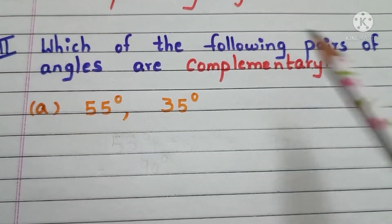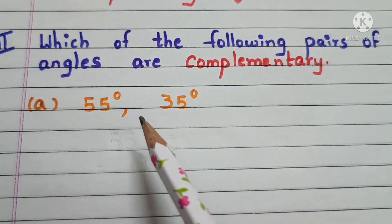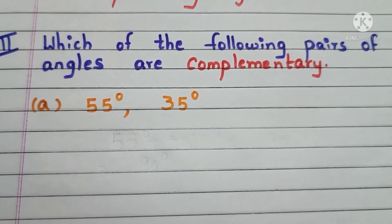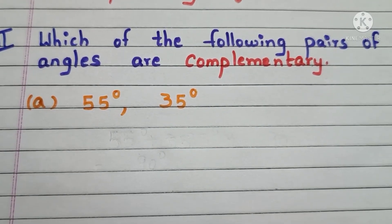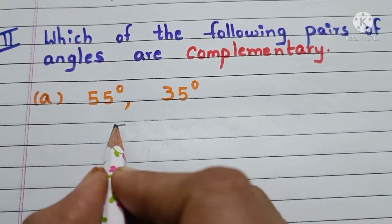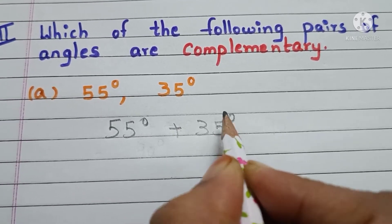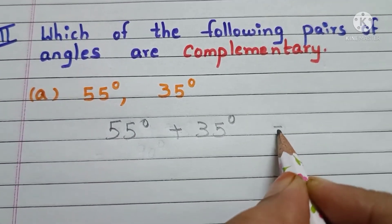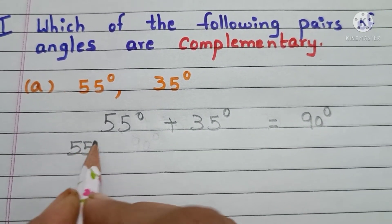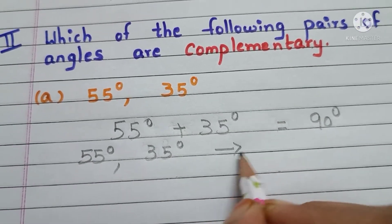Now, question number 2: which of the following pairs of angles are complementary? 55 degrees and 35 degrees. First, add these two angles. If we get the sum is 90 degrees, then these two angles are complementary. Let us see. Add 55 degrees and 35 degrees. 55 plus 35, that is equals to 90 degrees. So, 55 degrees and 35 degrees are complementary angles.